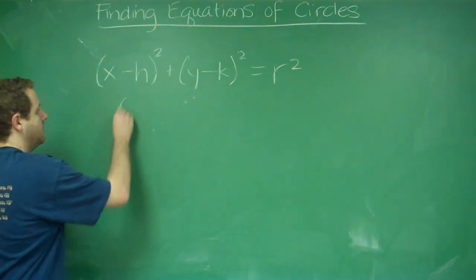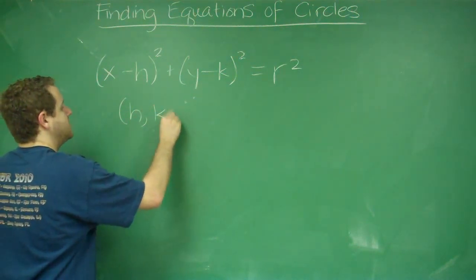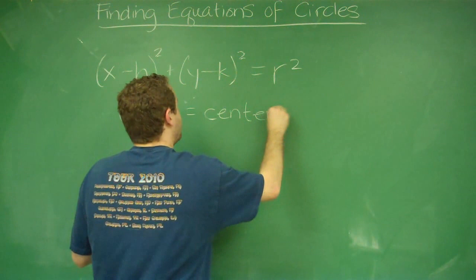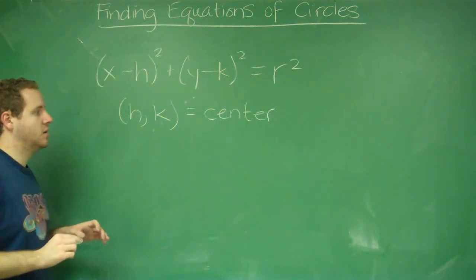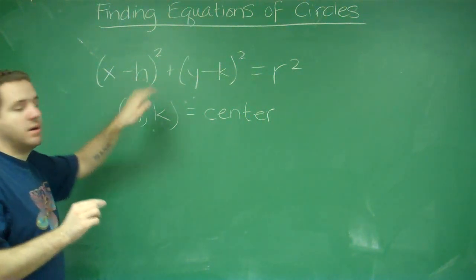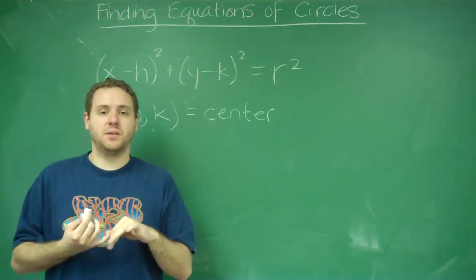h and k, this coordinate point (h, k), is the center of your circle. So, the x coordinate, the y coordinate. And keep in mind, if these are negative, then this will become a plus inside the formula there.